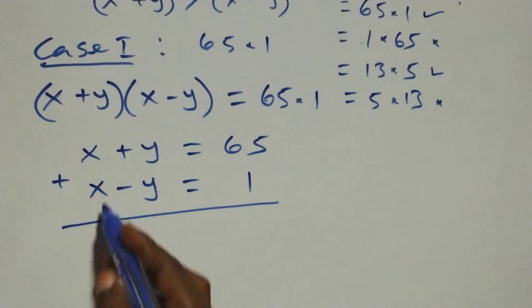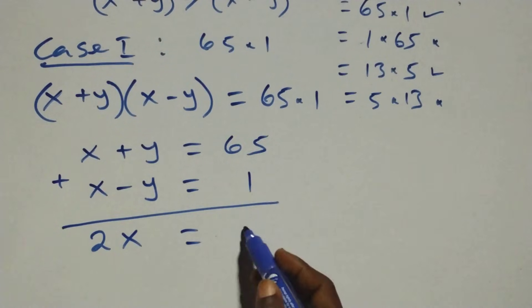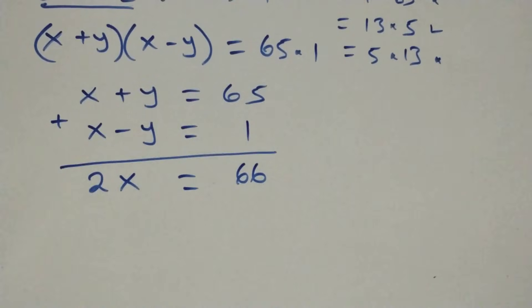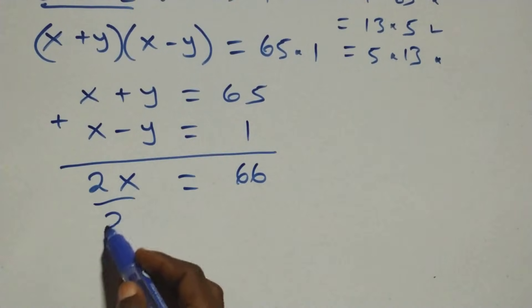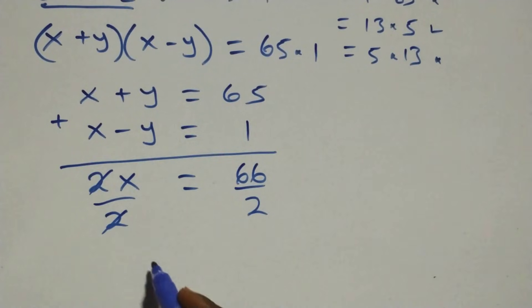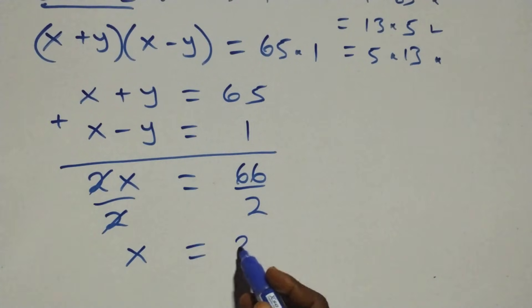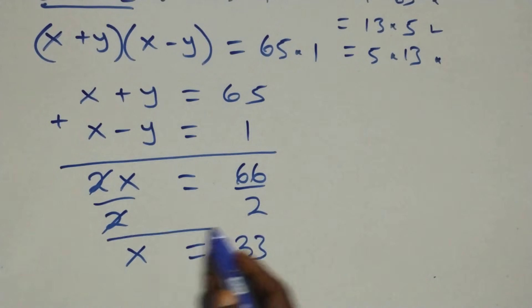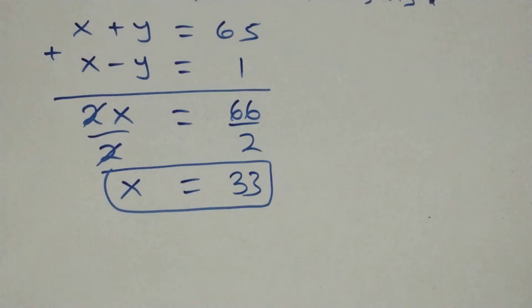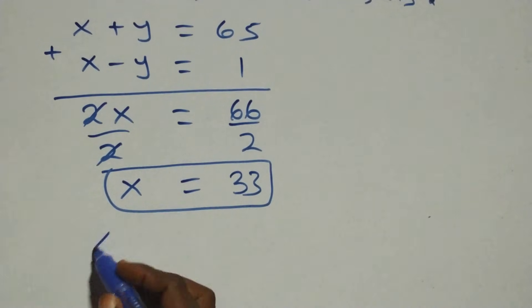We add the two equations to eliminate y: x plus x gives 2x, equals 65 plus 1, that's 66. Dividing both sides by 2, we get x equals 66 over 2, which is 33. So x equals 33.